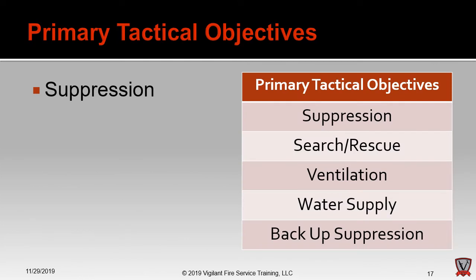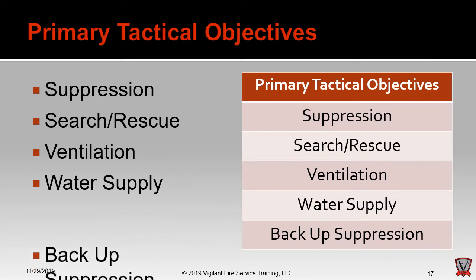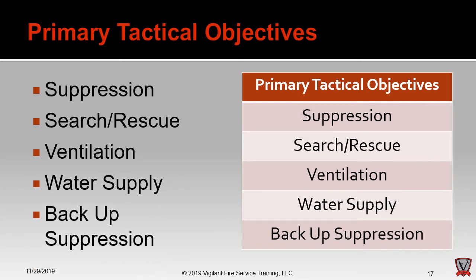The ten tactical objectives are broken into two groups of five. The first group — primary tactical objectives — are typically the first things we want to do on the fire ground because they have the biggest impact on the overall scene. The five primary tactical objectives are: suppression, search, ventilation, water supply, and backup suppression. These must happen at every single structure fire.